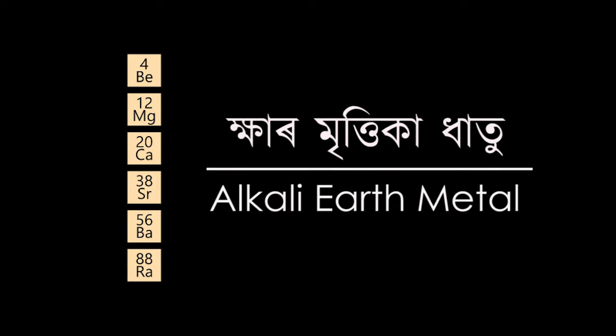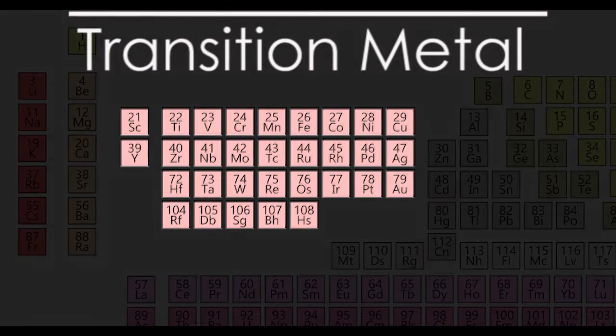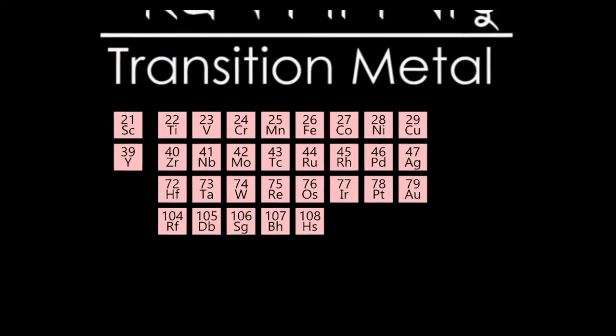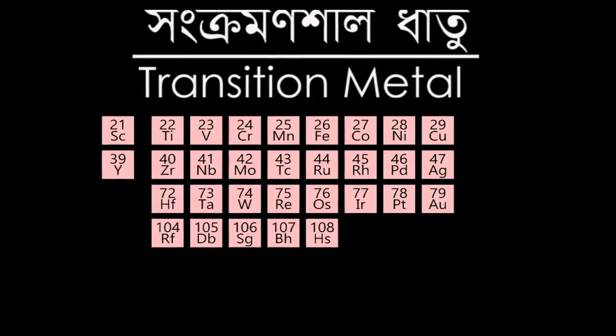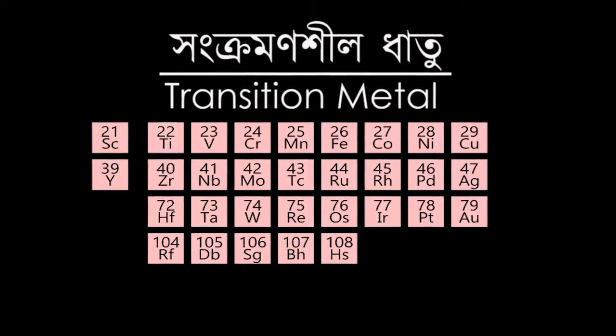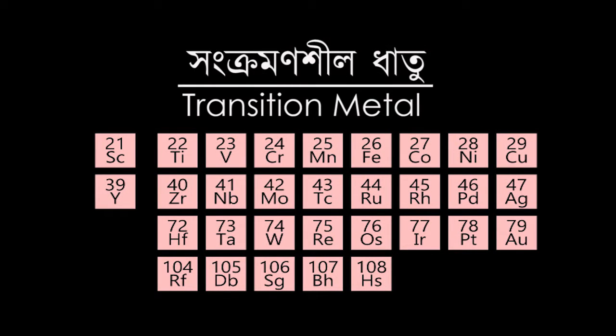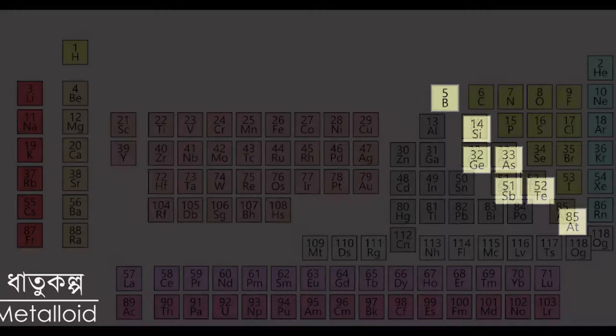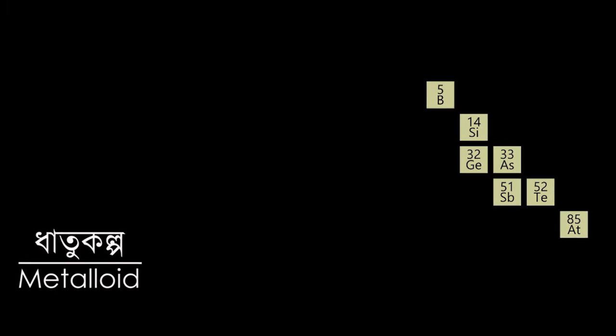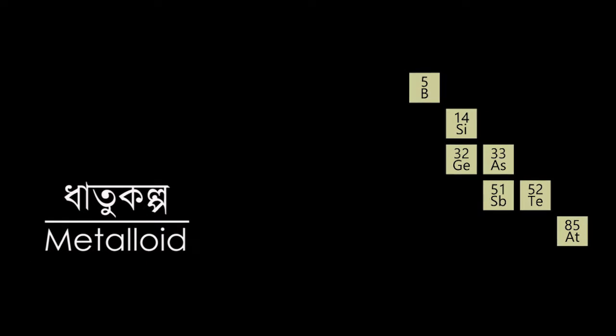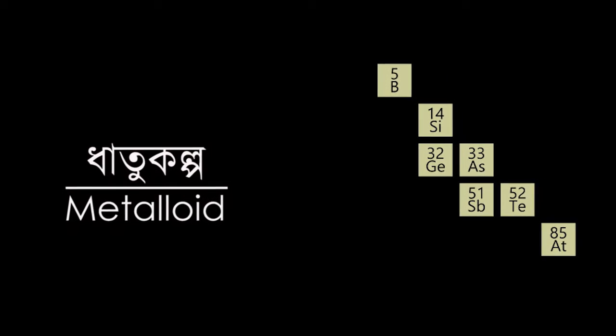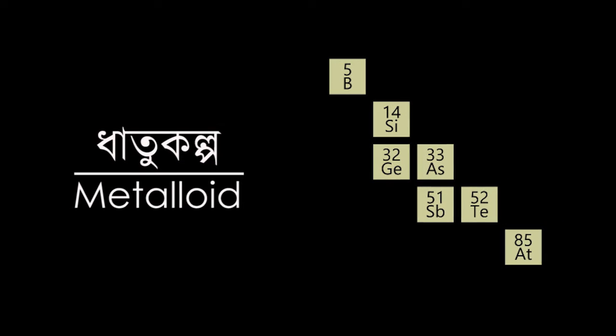The elements of the third to the 11th group are called transition metals. The compounds of these elements are colorful and attractive. The elements which lie between metals and non-metals are called metalloids. These metalloids show the properties of both metals and non-metals.